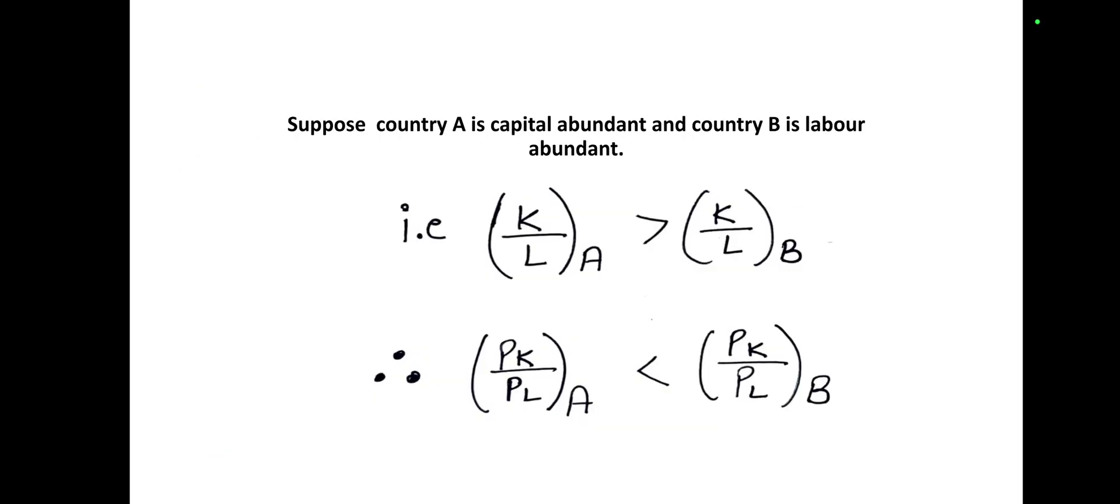Here we are taking country A as capital abundant and country B as labour abundant. So, we are taking here the ratio of capital to labour of country A will be more than country B as country A is capital abundant.